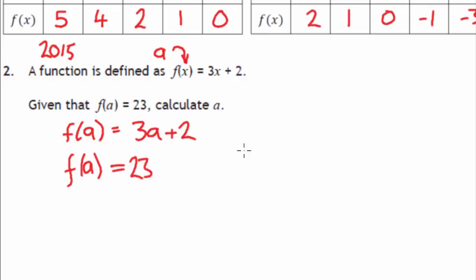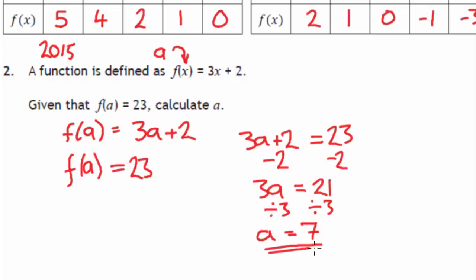So what we can say is, well, if they equal the same, these obviously equal the same, so we can now say 3a plus 2 equals 23, and then we can work out what a is. So subtract 2 from each side, that gives us 3a equals 21, divide each side by 3, and that gives you a equals 7, and that's your final answer.